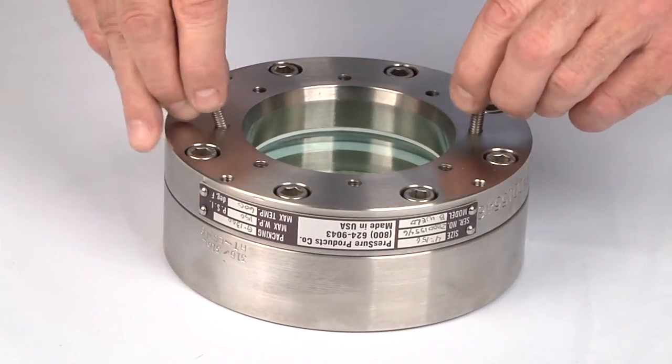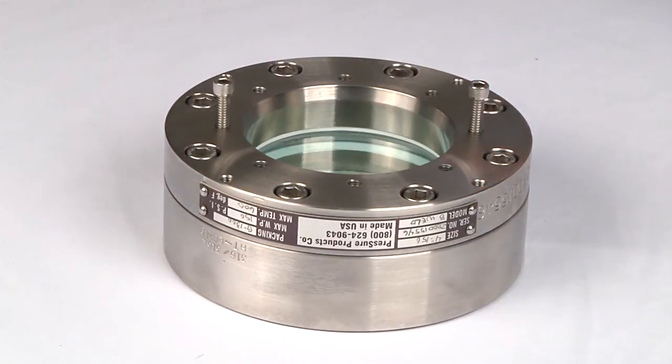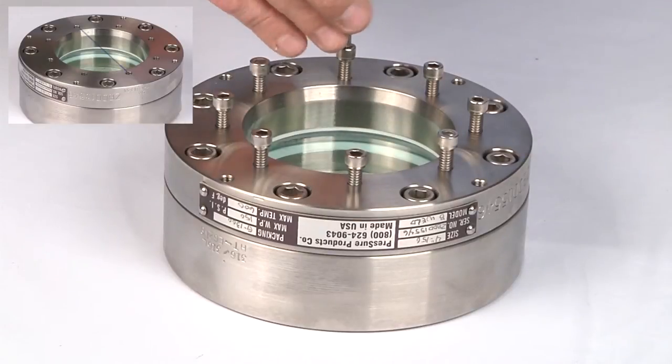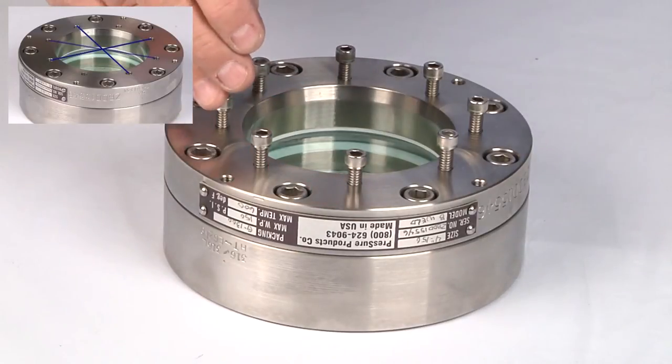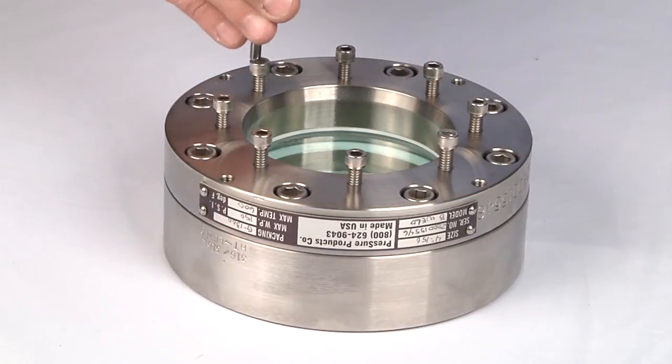Insert the compression adjustment screws. As you tighten the screws, work across diameters in a star pattern. Use this pattern to incrementally tighten the screws. This compresses the packing.